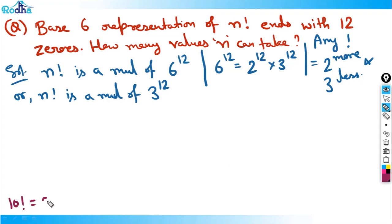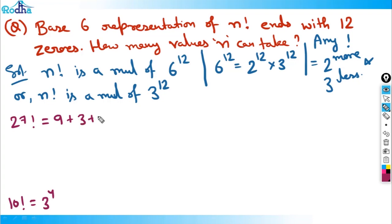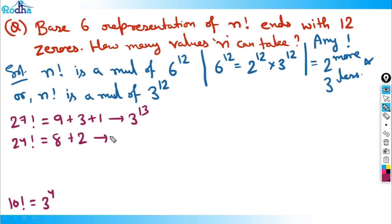By hidden trial: in 10 factorial, 3 occurs 4 times; so roughly 30 factorial has 3 occurring 12 times. Let's check around 30. In 27 factorial: 9 + 3 + 1 = 13, so power of 3 is 13. In 24 factorial: 8 + 2 = 10, so power of 3 is 10. We want power of 3 to be exactly 12.